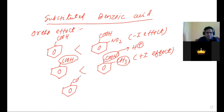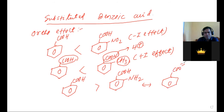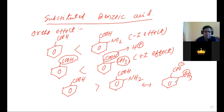Exception: ortho-aminobenzoic acid is less acidic than benzoic acid. This is because ortho-aminobenzoic acid forms a zwitterion (internal salt), where the NH₂ group donates a proton to form a structure with opposite charges. This internal stabilization means H⁺ is not released to the solution as easily, making it a weaker acid.